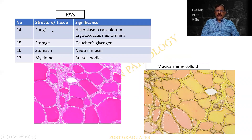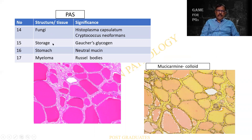And the list continues. The fungi — apart from mucormycosis etc. — Histoplasma capsulatum can be positive, Cryptococcus neoformans can also be positive. Gaucher's disease for storage. Stomach — the neutral mucin. And in myeloma, there are Russell's bodies. I am stopping at 17, but probably you can trace the list a lot. You should be in a zone of comfort wherein you have your own list.